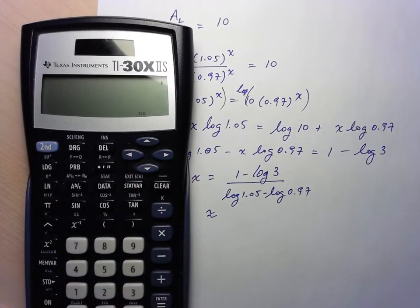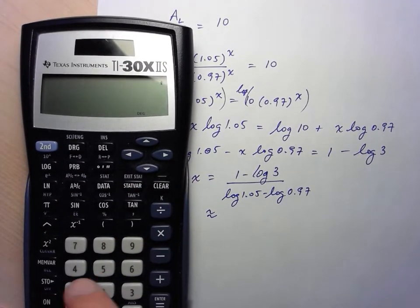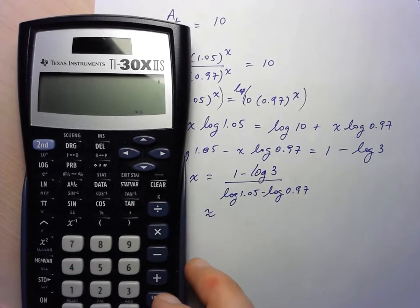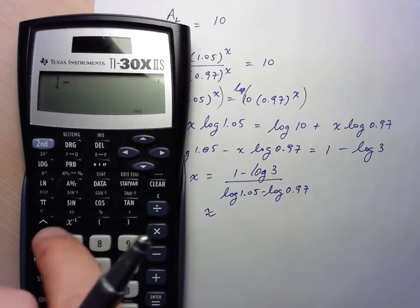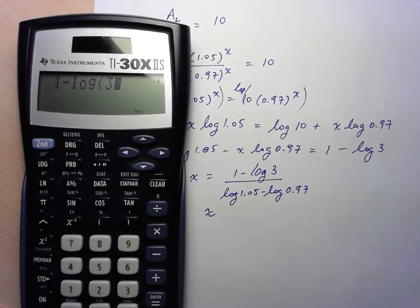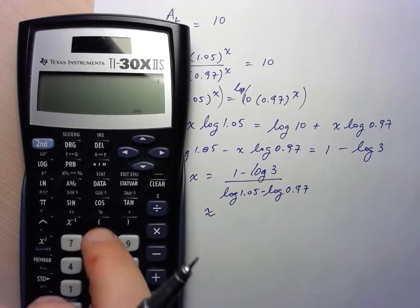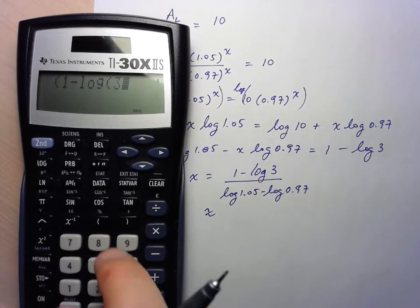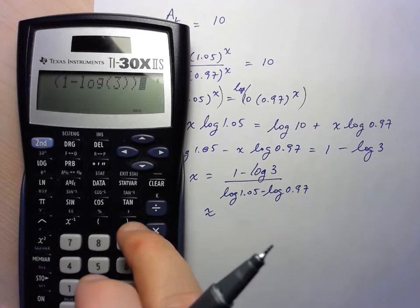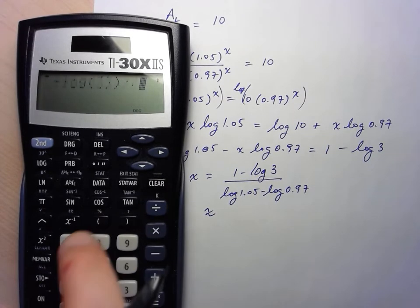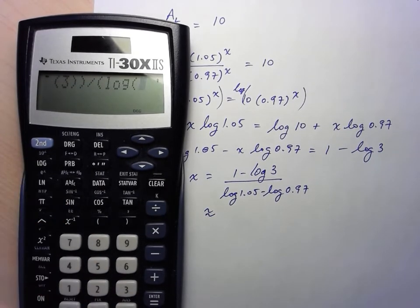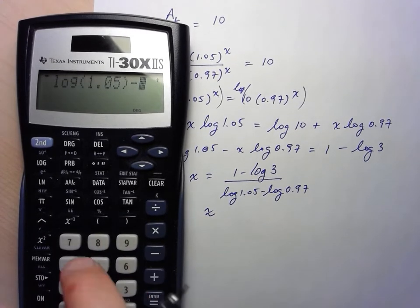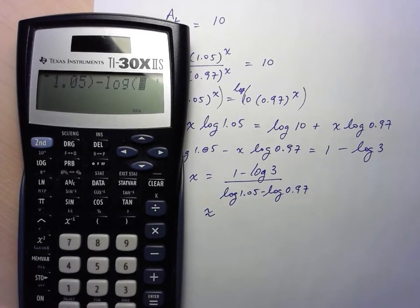So we've got 1 minus... Actually, I forgot to put brackets around my numerator. So 1 minus log of 3, divided by log of 1.05 minus log of 0.97.